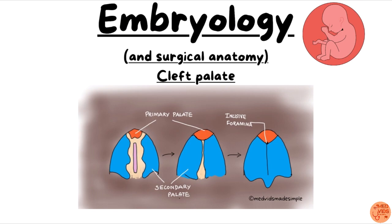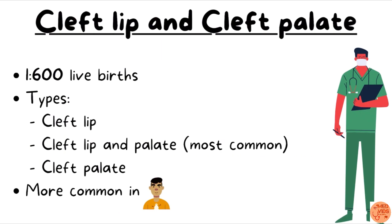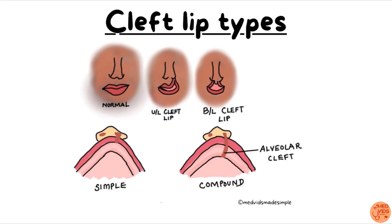If there is any defect in the processes involved in their formation, cleft lip and cleft palate can occur. Cleft lip and cleft palate are seen in one per six hundred live births. They can be classified as cleft lip alone, cleft lip and cleft palate together (which is the most common type), or cleft palate alone. This condition is more common in males.